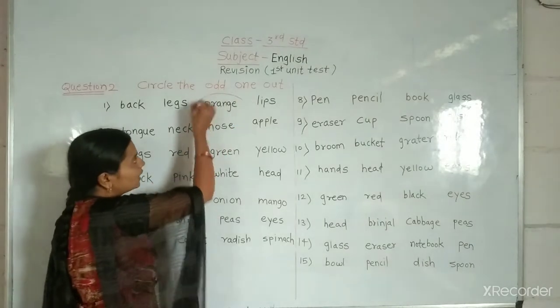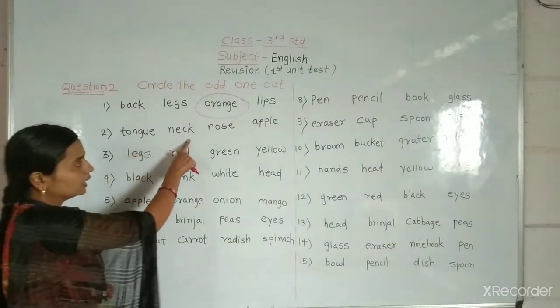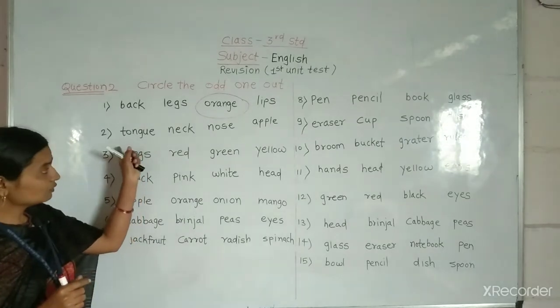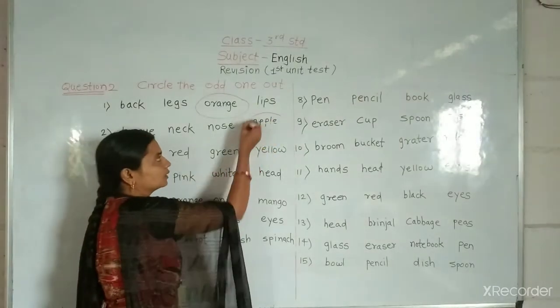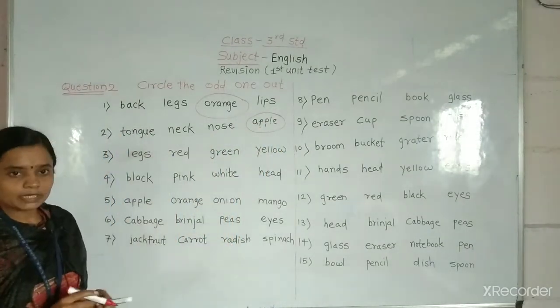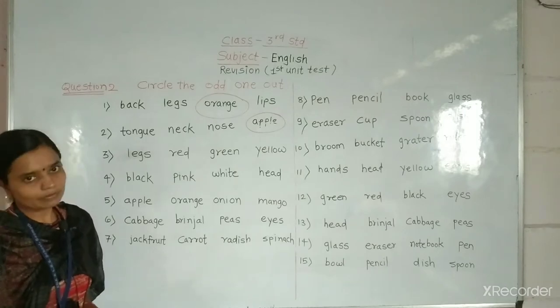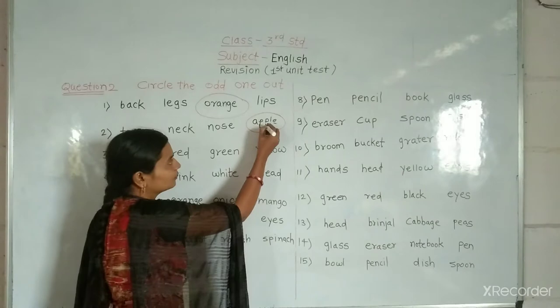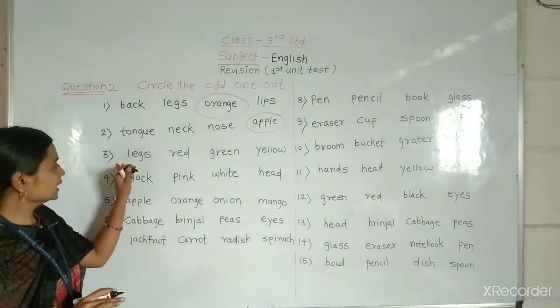Now we will see next. Tongue, neck, nose, apple. So which word is odd one word? Very good. Apple. And what else is the word? The other word is the parts of the body. Apple is odd one word.